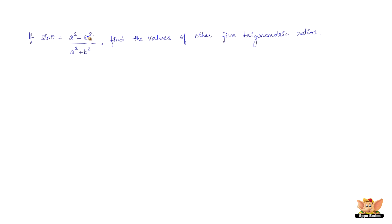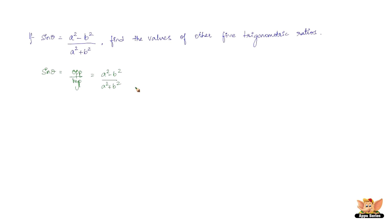In this problem we have sine theta, where theta is a commonly used Greek symbol for angles in geometry. Sine theta is given as (a² − b²) by (a² + b²). Since sine equals opposite by hypotenuse, we identify the opposite as a² − b² and the hypotenuse as a² + b². Now let us draw a right angle triangle.